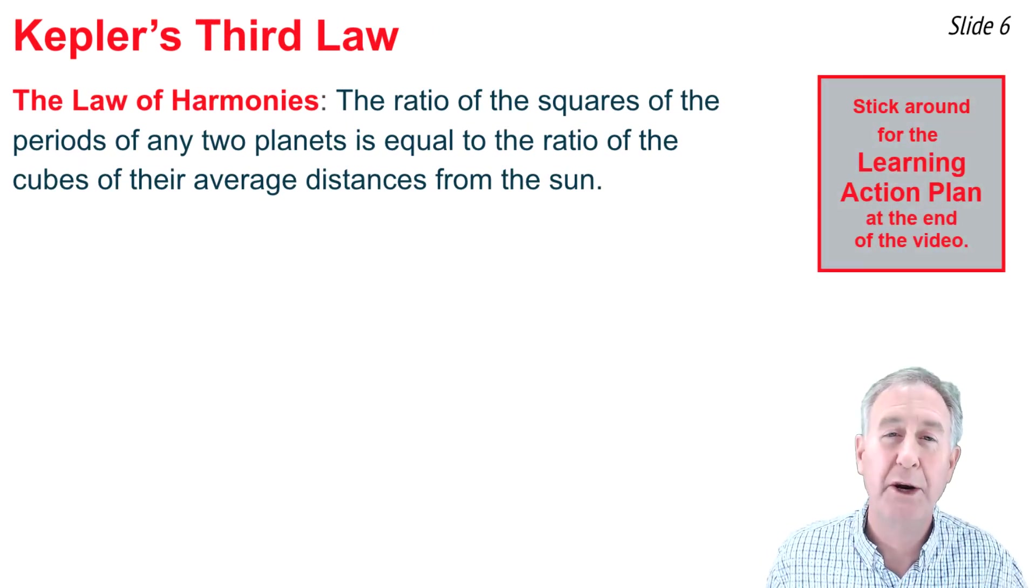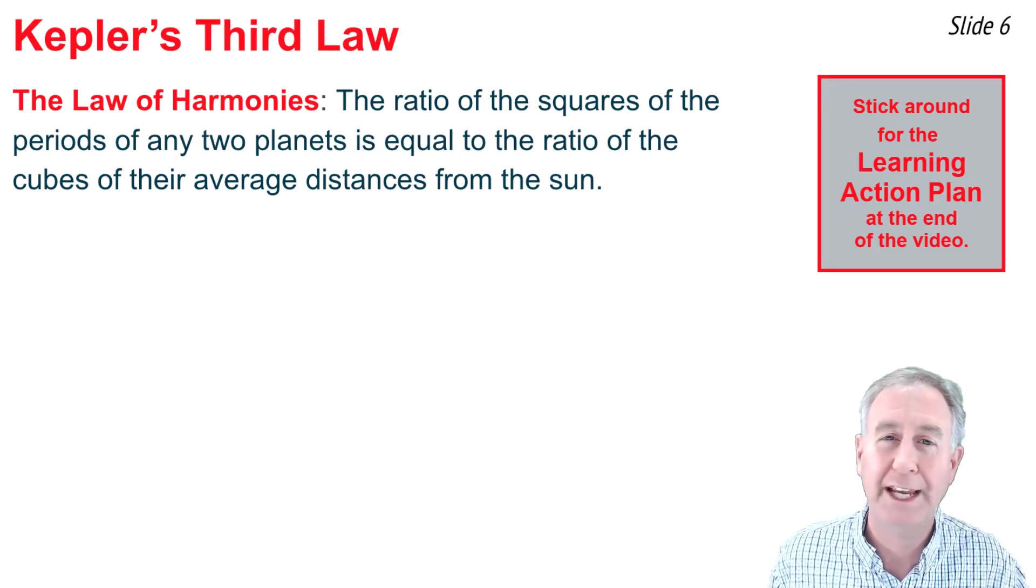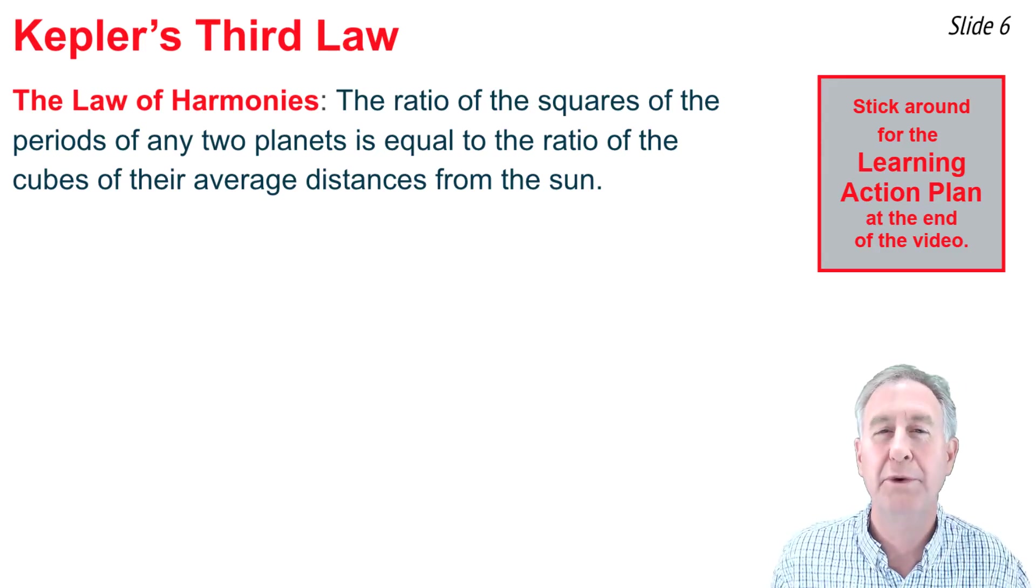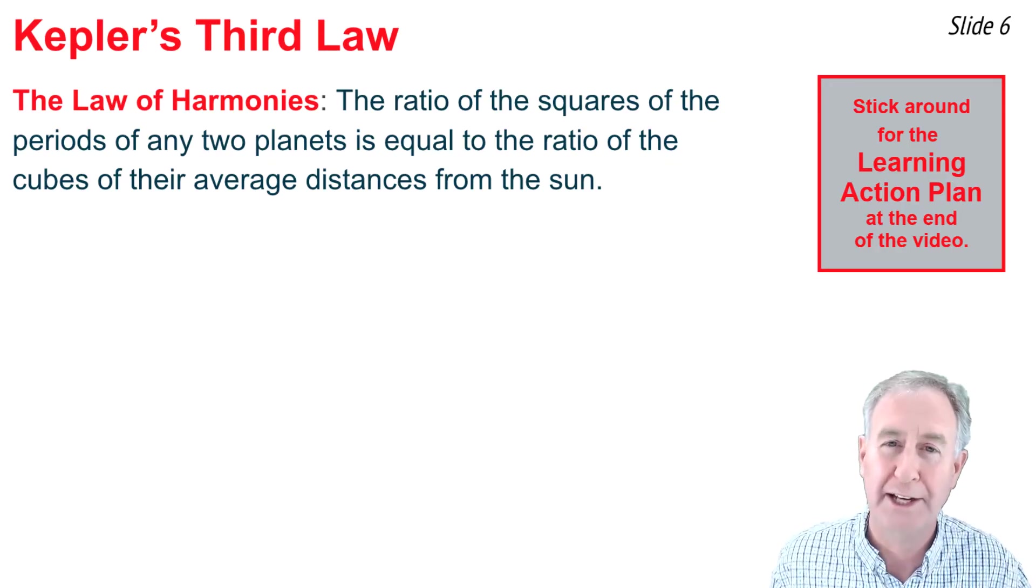The third law is known as the law of harmonies, and it states that the ratio of the period squared for any two planets is equal to the ratio of the cubes of their average distances of those planets to the sun.